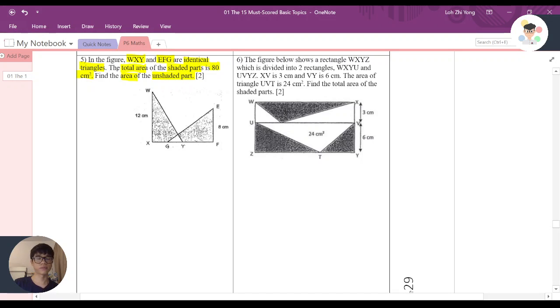So let's look at the question. WXY and EFG are identical triangles, which means that if here is 12 cm, then here to here should be 12 cm.